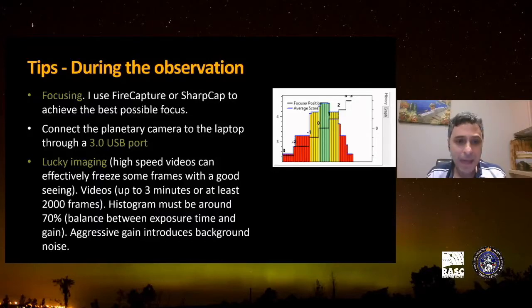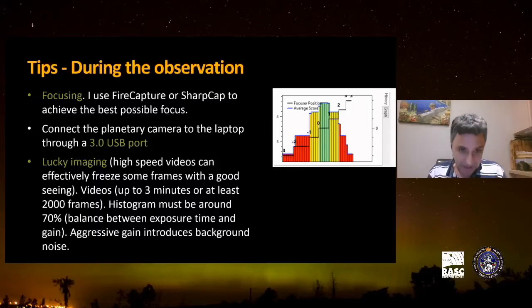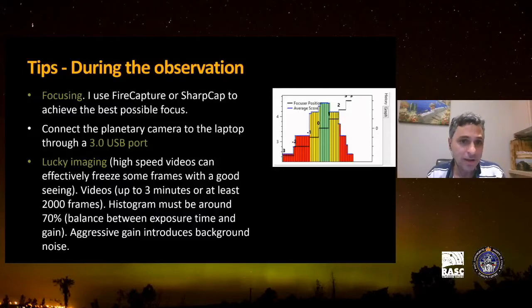Connect your planetary camera to the laptop through a USB 3.0 port to transfer images as fast as possible, then start your imaging program. High-speed videos can effectively freeze some frames because our atmosphere is moving the images. I'd say 2,000 frames or above is the best number, depending on transparency conditions. The histogram must be around 70% — you have to balance exposure time and gain. Don't use too aggressive a gain because it will introduce background noise that is difficult to remove in post-processing.